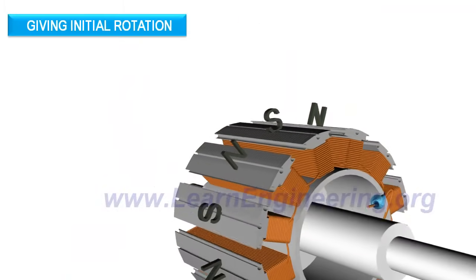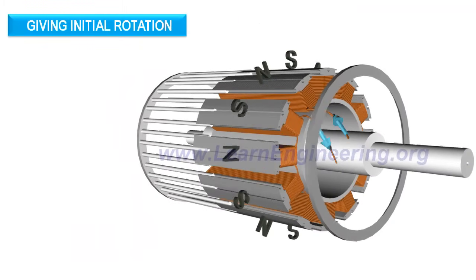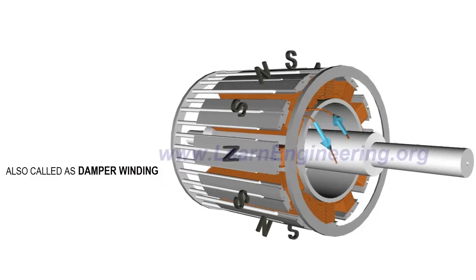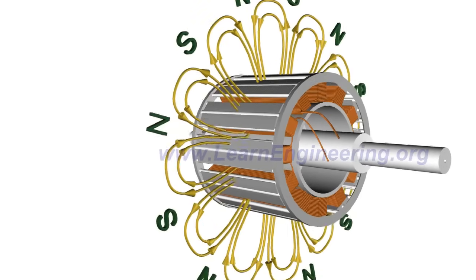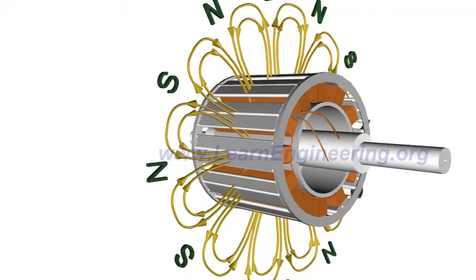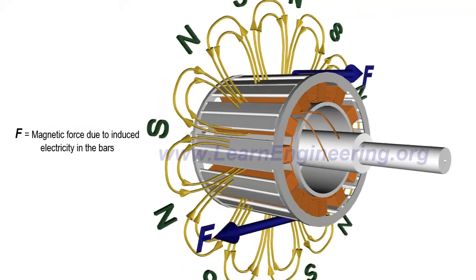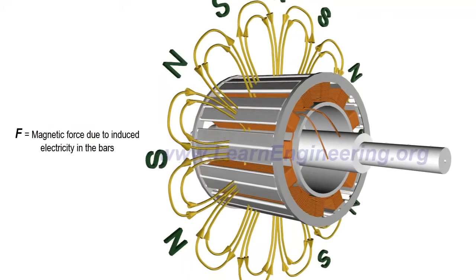To make synchronous motors self-start, a squirrel cage arrangement is cleverly fitted through pole tips. At the starting, rotor field coils are not energized. So with revolving magnetic field, electricity is induced in squirrel cage bars and rotor starts rotating just like an induction motor.